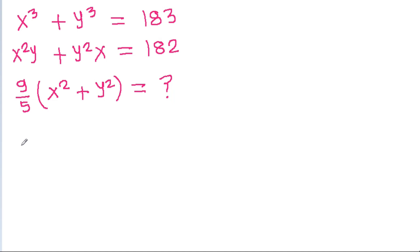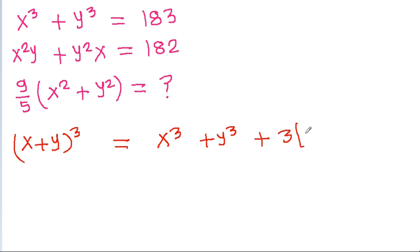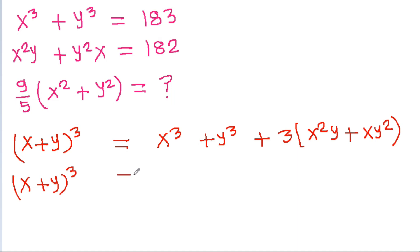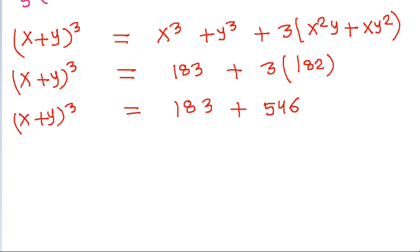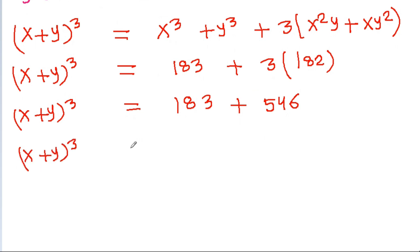We know that x plus y whole cubed is equal to x cubed plus y cubed plus 3 times x squared y plus x y squared. So x plus y whole cubed is equal to 183 plus 3 times 182, which is 546. Therefore x plus y whole cubed is equal to 183 plus 546, which is 729, and x plus y will be equal to the cube root of 729, which is 9.